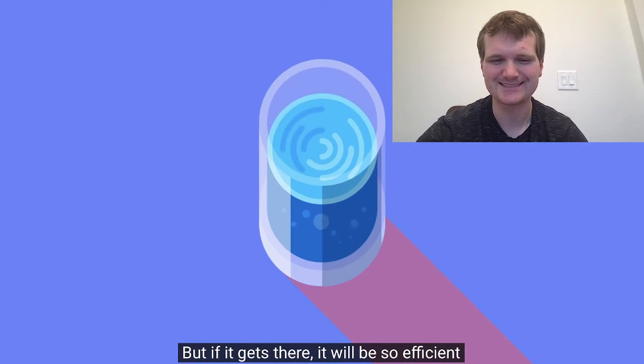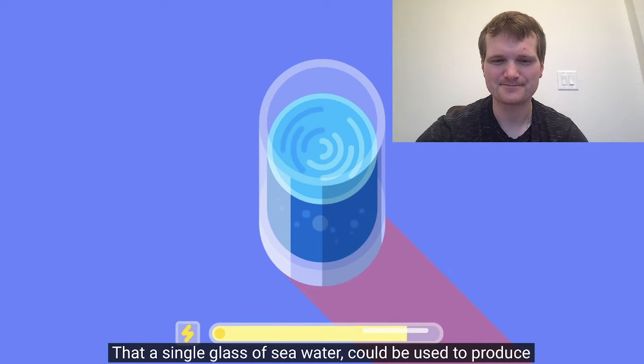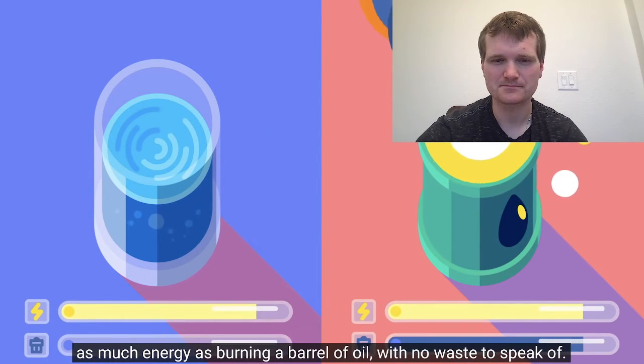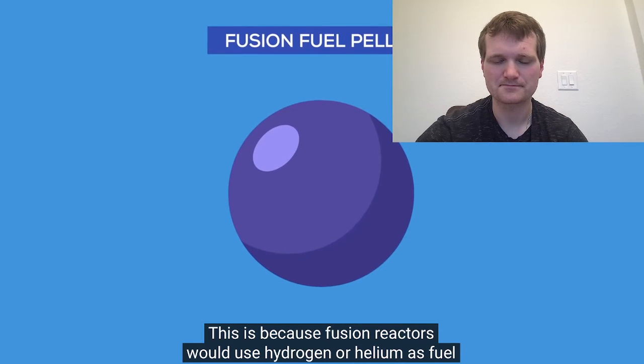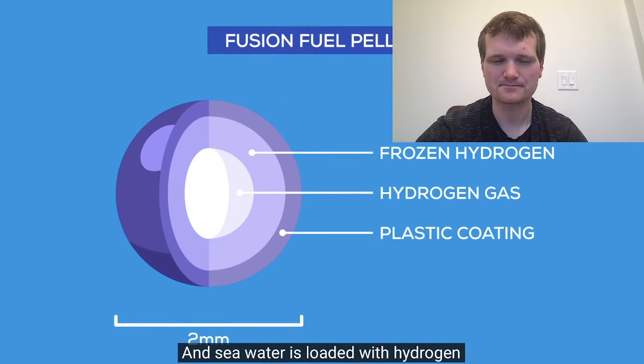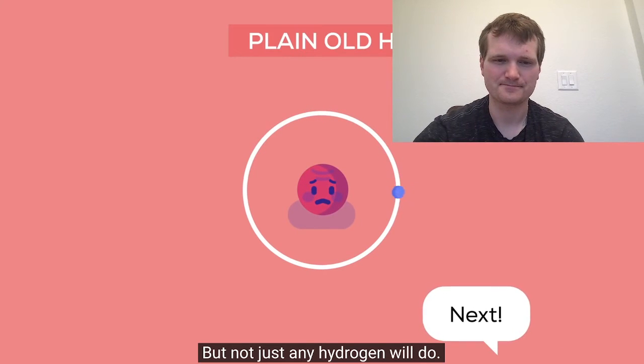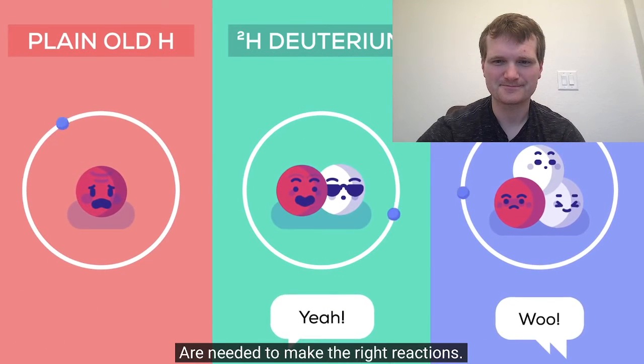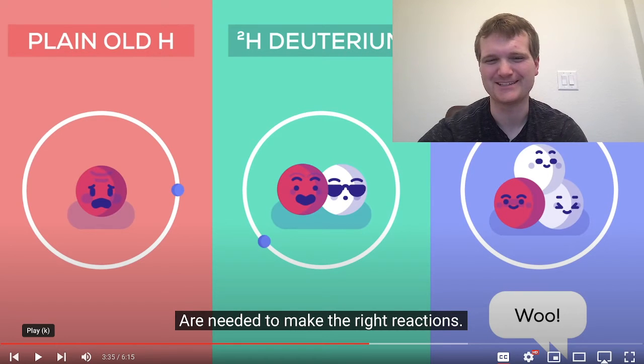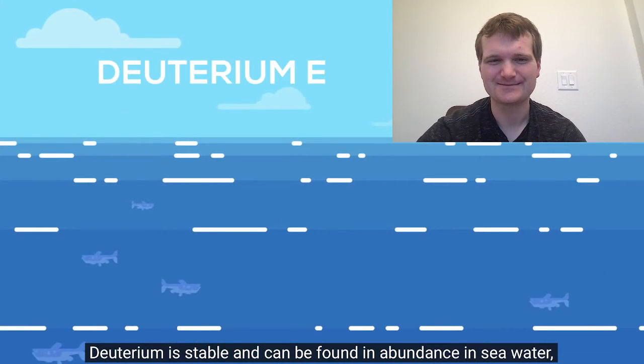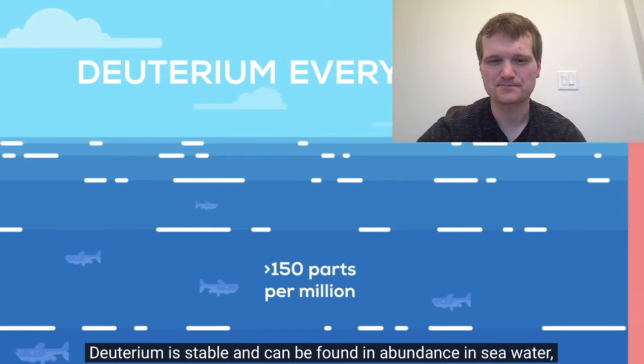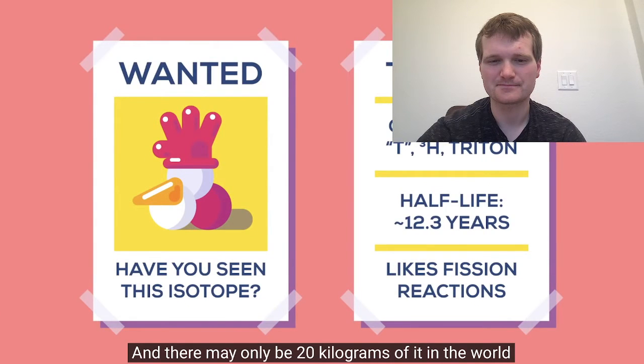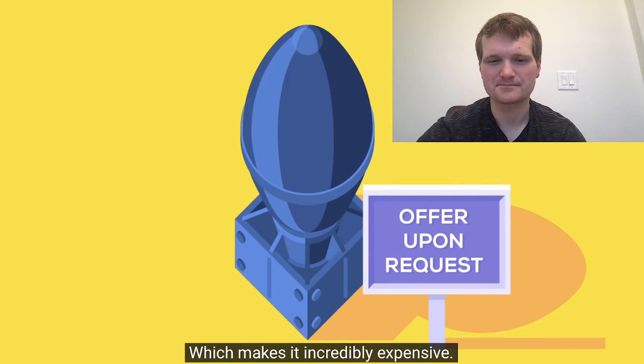But if it gets there, it would be so efficient that a single glass of seawater could be used to produce as much energy as burning a barrel of oil with no waste to speak of. This is because fusion reactors would use hydrogen or helium as fuel, and seawater is loaded with hydrogen. But not just any hydrogen will do. Specific isotopes with extra neutrons, called deuterium and tritium, are needed to make the right... That's a funny animation. Deuterium is stable and can be found in abundance in seawater, though tritium is a bit trickier. It's radioactive, and there may only be 20 kilograms of it in the world, mostly in nuclear warheads, which makes it incredibly expensive.